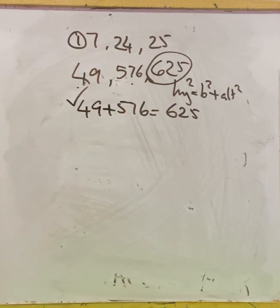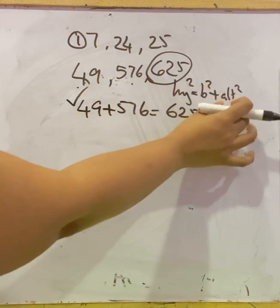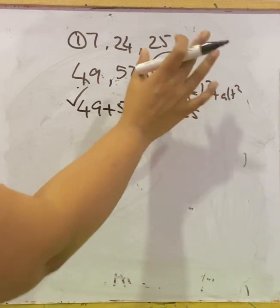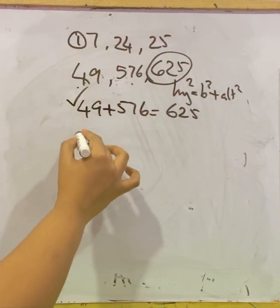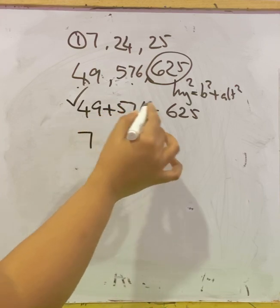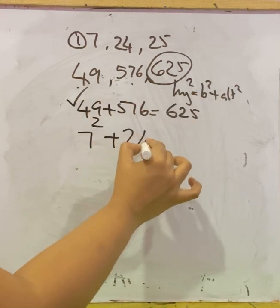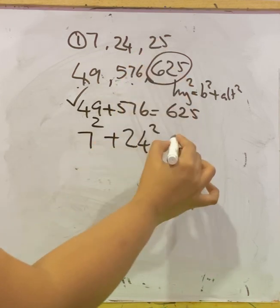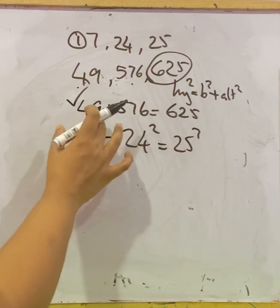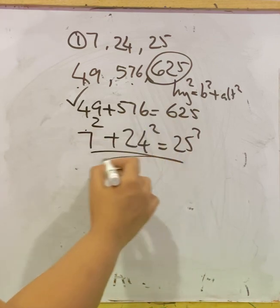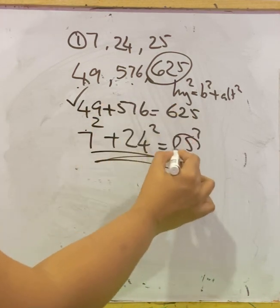Yes, we get the biggest number. So this is a right triangle because base² + altitude² = hypotenuse². We can write: 7² + 24² = 25². From this, the hypotenuse is 25.